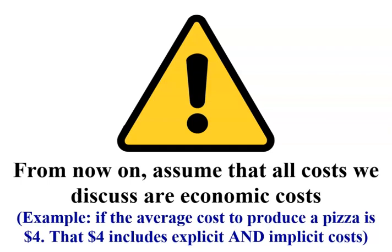So if the average cost to produce a pizza is $4, that $4 includes both explicit and implicit costs, and the price or sales revenue is $5.